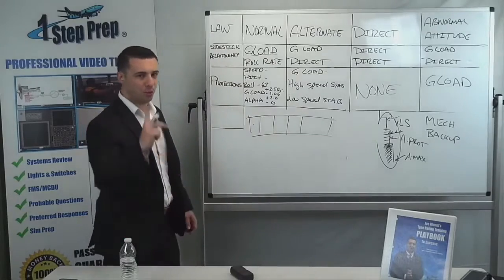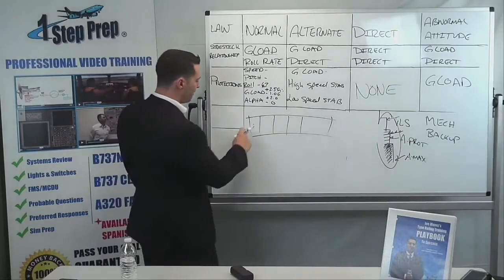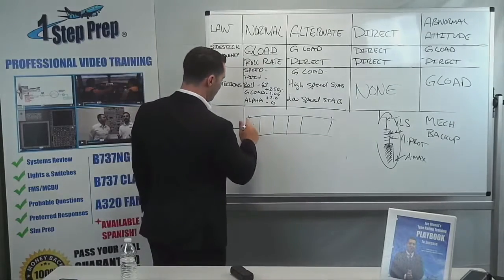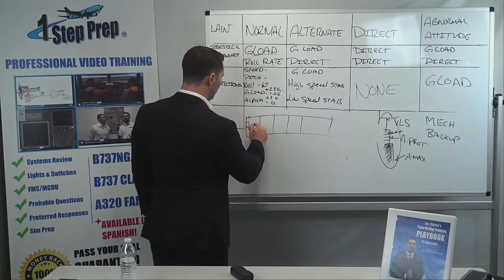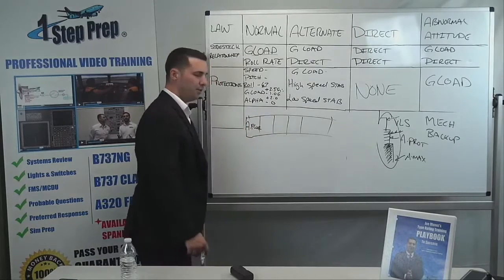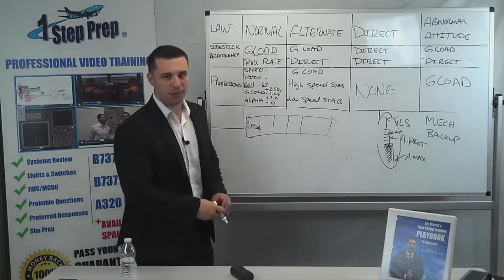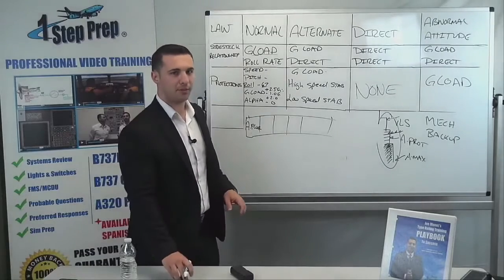Our auto thrust column is number one — it's on the far left. Over here you're going to see alpha floor, and this is alpha floor. It's telling you that toga power has been commanded.